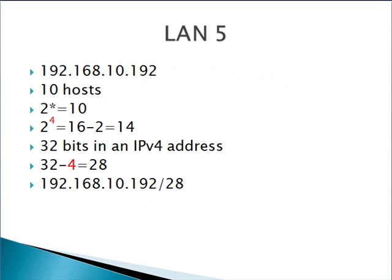LAN 5 — we're starting at 192.168.10.192 and we only need 10 hosts this time. We take it to the 4th power, giving us 16, minus 2 gives us 14 usable hosts. 32 minus 4 is 28.